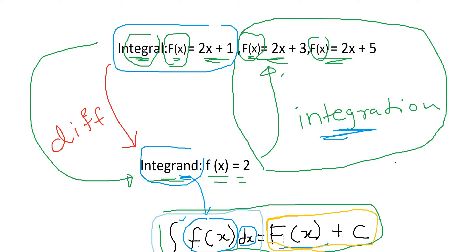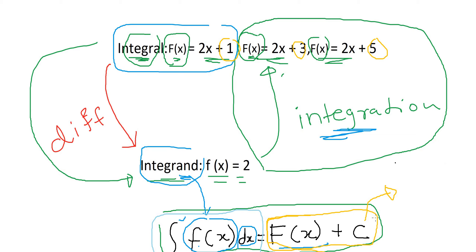With the original function there can be any constant — it can be 5, 3, or 1 — but all of them disappear when you differentiate because they become zero. So the original function can have any constant attached to it, and that is why we use C. This C has a special name: it is called the constant of integration.